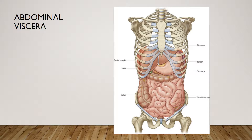Sometimes a physician will call this a KUB, which means kidneys, ureters, and bladder. What you really need to keep in mind is that you want to have the diaphragm on top and the symphysis pubis on the bottom. You can see underneath the diaphragm we have all of the abdominal organs or abdominal viscera, and above the symphysis pubis — the pubic bone — we have all of the abdominal viscera, especially the bladder. Make sure you are x-raying from the diaphragm all the way down to the symphysis pubis.